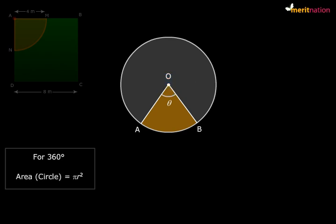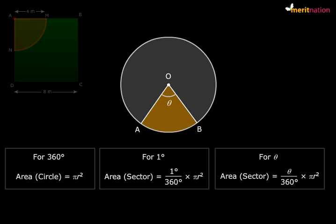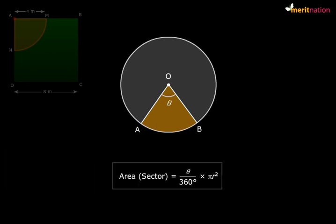What would be the area of the sector for 1 degree? That would be 1 divided by 360 degrees times πr². And if the angle subtended at the center is theta, then the area of the sector would be θ/360° × πr². So we now have our formula: Area of a sector of angle theta equals θ/360° × πr².